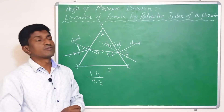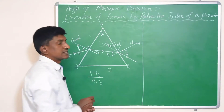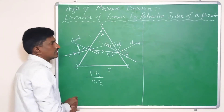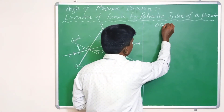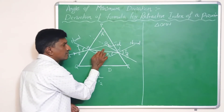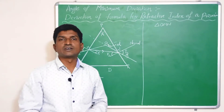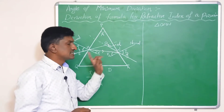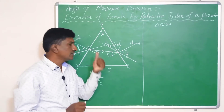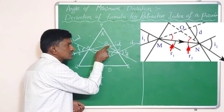Now let us derive the formula for the refractive index of the prism. From this ray diagram we can observe a triangle — triangle OMN. The angle of deviation is the exterior angle for triangle OMN. We know that an exterior angle is equal to the sum of the two opposite interior angles.